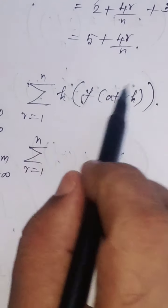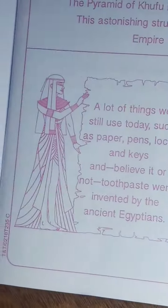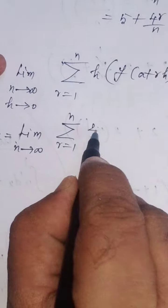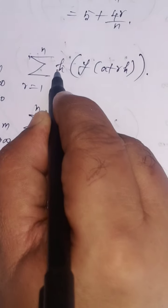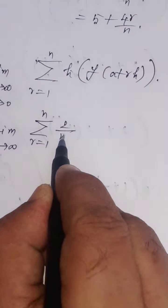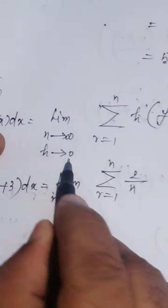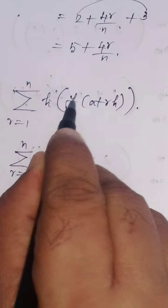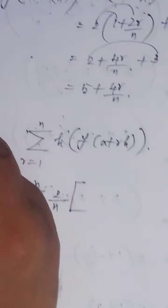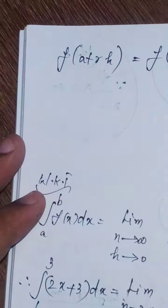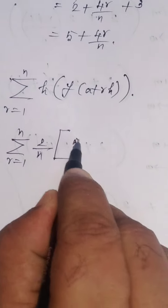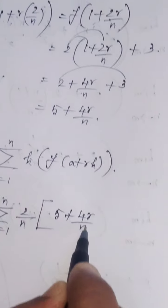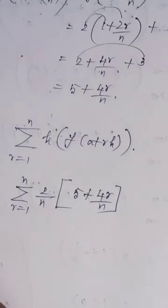Then, h can be replaced by its value. h equals 2 by n. Since h is expressed in terms of n, we drop the h tends to 0 condition. So, f(a + rh) here is 5 plus 4r by n.